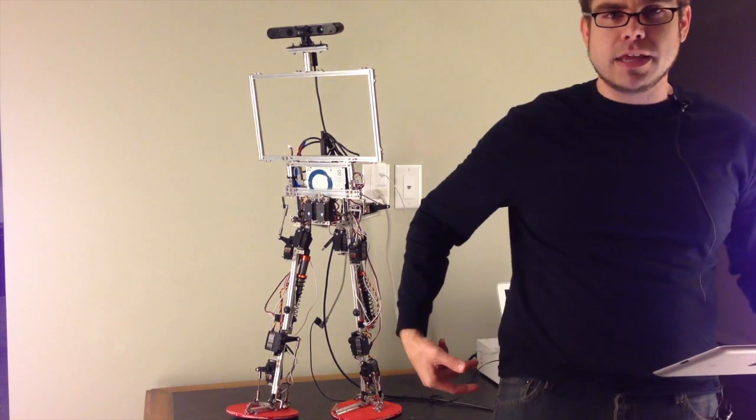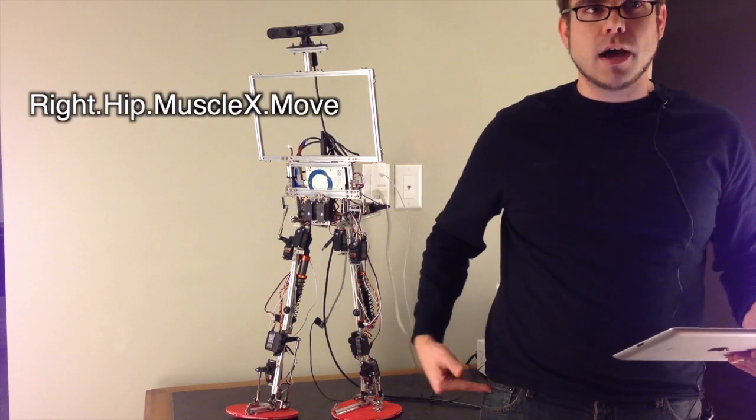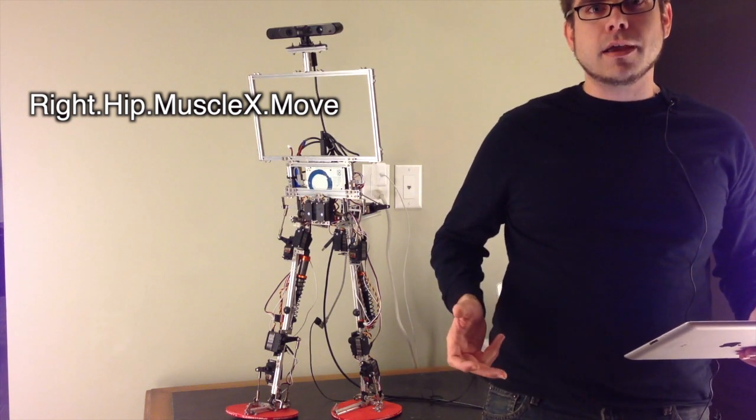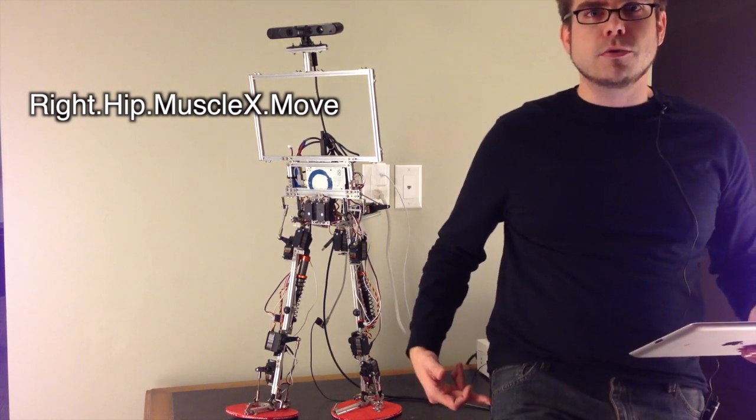So the rotation about the X coordinate moves your leg forward or backward. So hip dot muscle X dot move. And then you tell it the command of how far you'd like it to move. And that's what makes his right leg move forward.